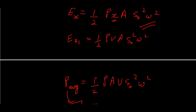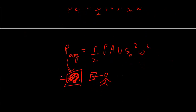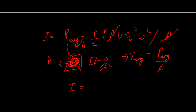The average intensity is P_average divided by the area of the wavefront, which is the area A of the cylinder. So to get intensity, I divide by A — and the A cancels out. Intensity is the power I would get per one square meter, and it equals ½·ρ·v·s₀²·ω², where ρ is the density of the medium and v is the wave speed. And that is the story of intensity.